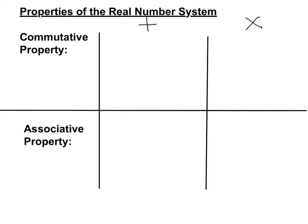Alright folks, hello and welcome to this video example on the properties of the real number system. Please follow along and fill in the blanks on your chart as we look through these five important properties. On the left column it has the property, on the middle column it has the addition version of that property, and on the right column it has the multiplication version. Let's jump right in.